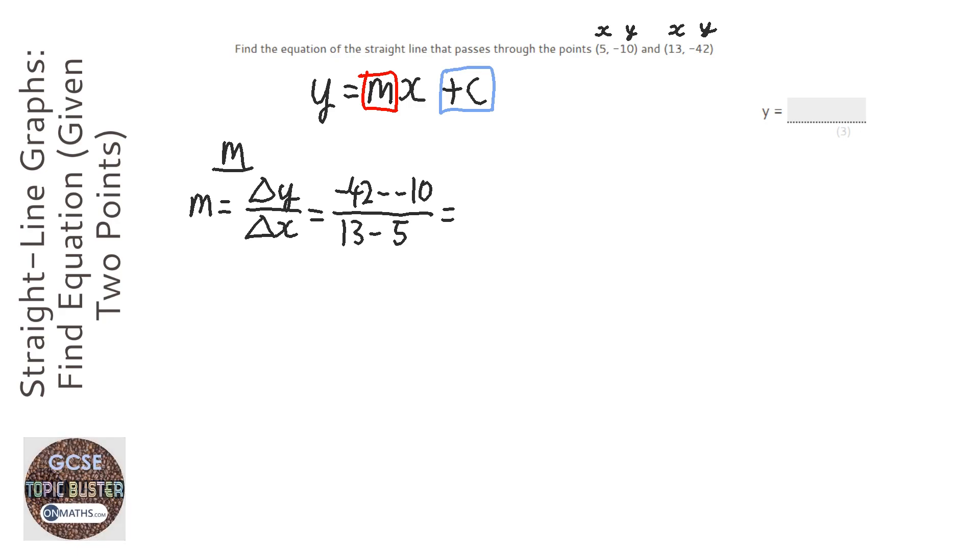So, those two minuses make a plus, so it's minus 42 plus 10, which is minus 32, over 13 take away 5, which is 8. Minus 32 divided by 8 is going to be minus 4. So, the gradient is minus 4.